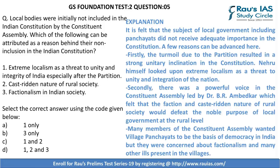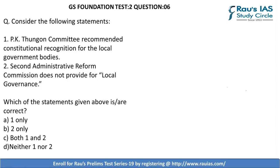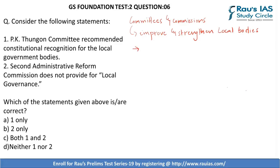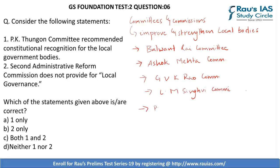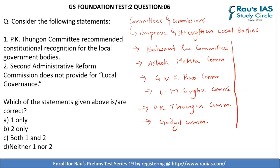Question 6 asks us to consider two statements about local government bodies. The focus is on various committees and commissions constituted by the Government of India to improve local self-governing bodies. Important committees include: the Balwant Rai Committee — the first to recommend a three-tier panchayat system; the Ashok Mehta Committee; the J.V.K. Rao Committee; the L.M. Singhvi Committee; the P.K. Thangon Committee; and the Gadgil Committee. You need not memorize all names, but associate them with the topic.